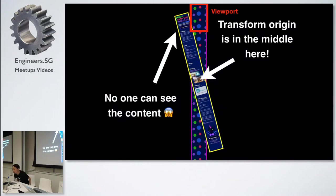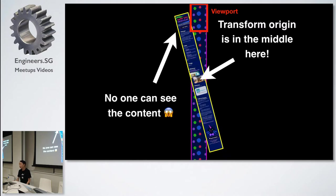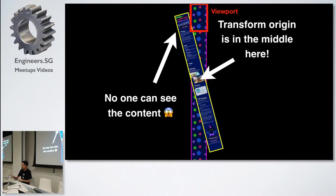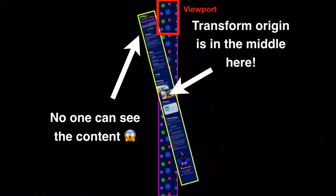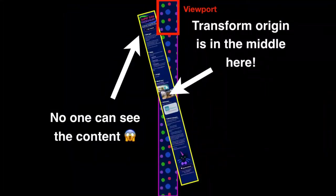So I rotate the whole page. Turns out that by default, CSS transform origin is in the middle. So if I rotate the whole page, the red border — which is your viewport or your first screen of the page — you actually can't see anything. I scroll halfway and then we can see the middle part. So how do I fix this?